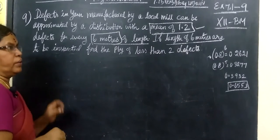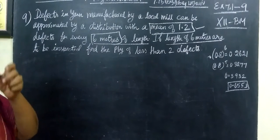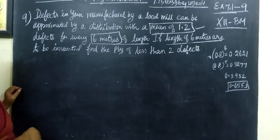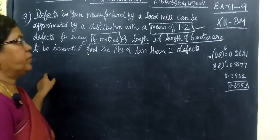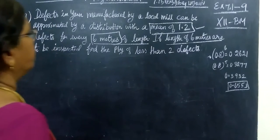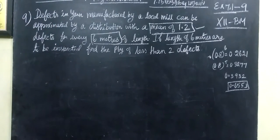Question number 9, Exercise 7.1. Defects in yarn manufactured by a local mill can be approximated by a distribution. The distribution is binomial.